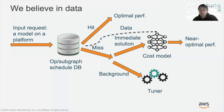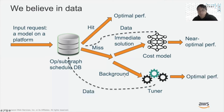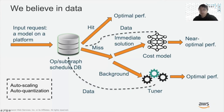In addition to the immediate solution from the cost model, in the background we will kick off a tuner to tune the compute on the given hardware. The tuning technique is orthogonal here — we can use any tuner — and the tuned result will be stored back into the database. More advanced, we can also consider auto-scaling and auto-quantization upon receiving a request, especially for models running on edge devices which prefer lighter computations.